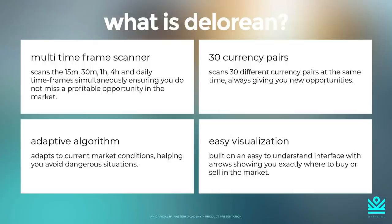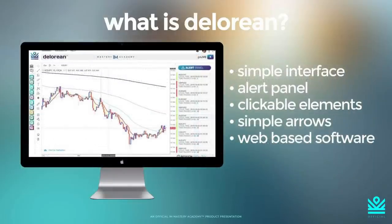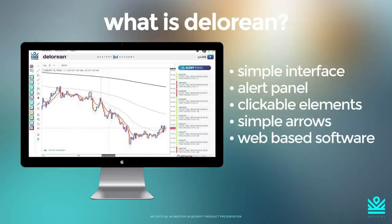It comes with an easy visualization — it is very easy to see when and where the DeLorean wants you to buy or sell in the market. This is the DeLorean scanner. On the right side we have the alert panel showing you exactly what you should be buying or selling, and on the left side is your currency pair. You have some lines already set up for you — this is a template set up directly for you, and everything in here is clickable. When you click an alert, it'll open up and populate on the chart.